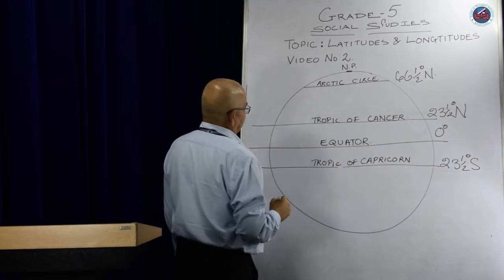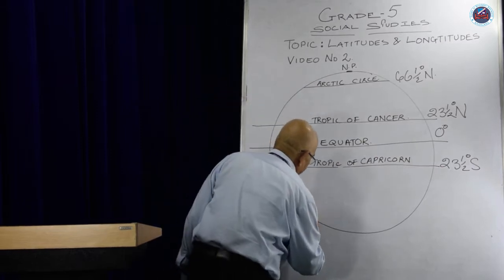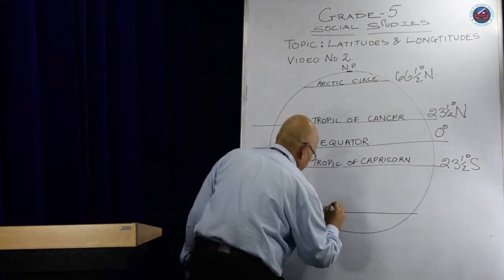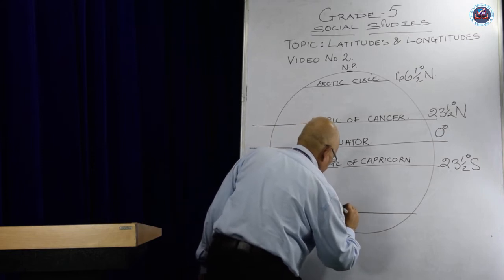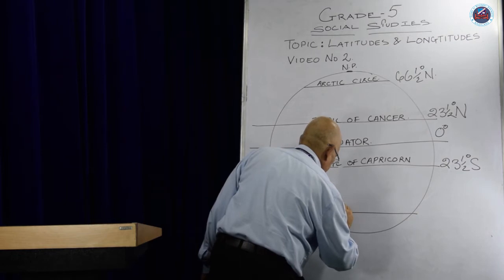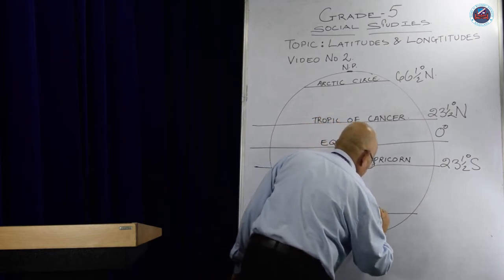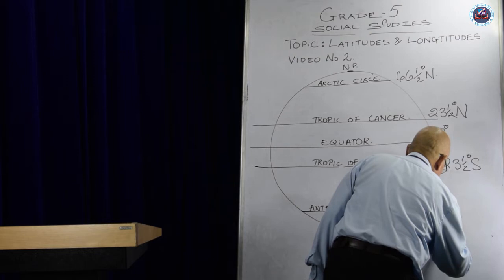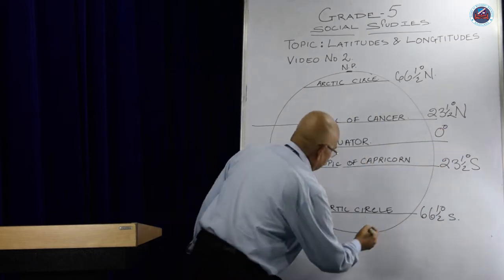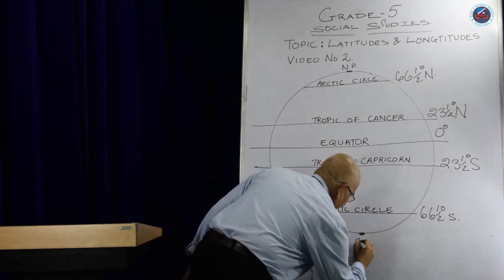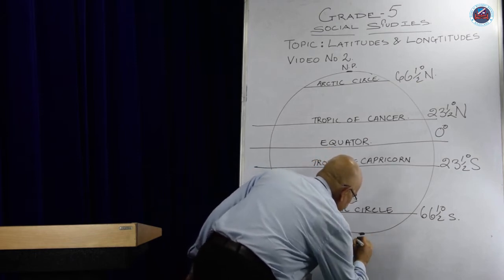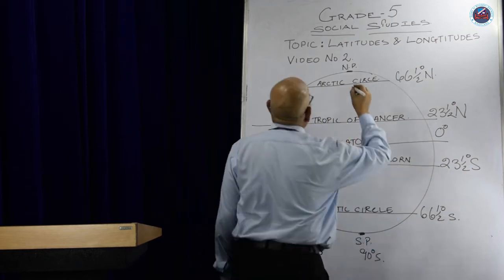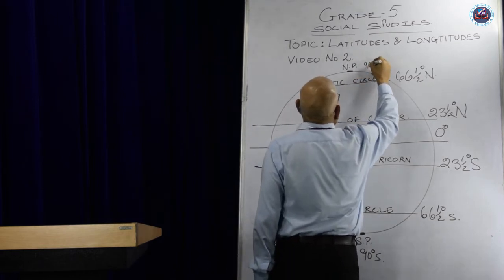Another important one is the Antarctic Circle, which is at 66.5 degrees south latitude. And then we have the south pole which is at 90 degrees south, and the north pole at 90 degrees north.